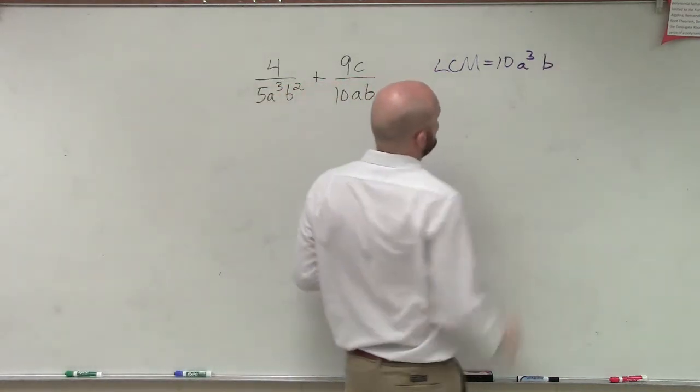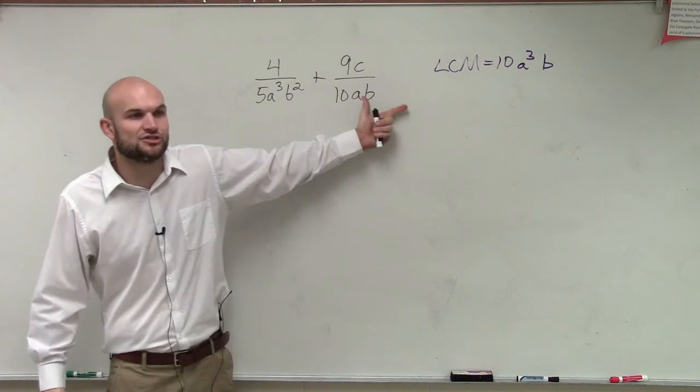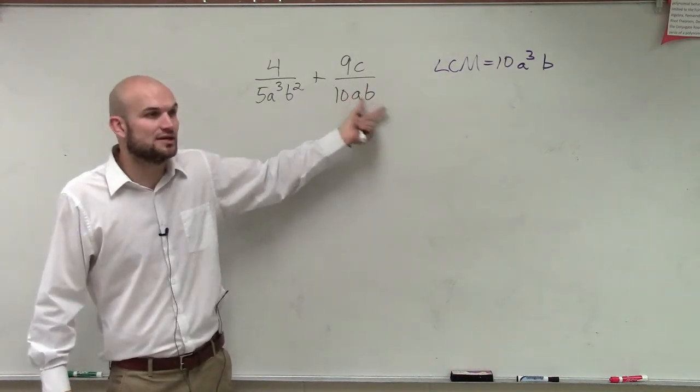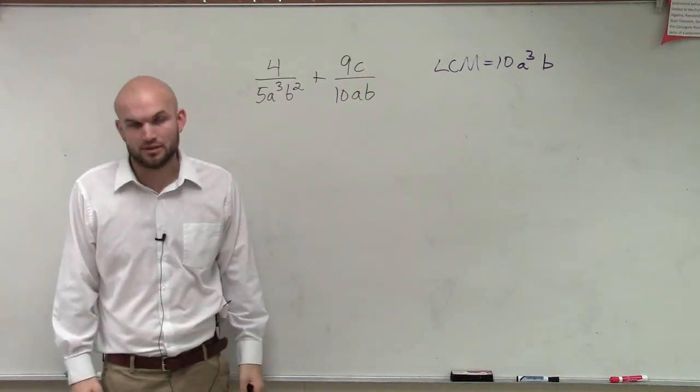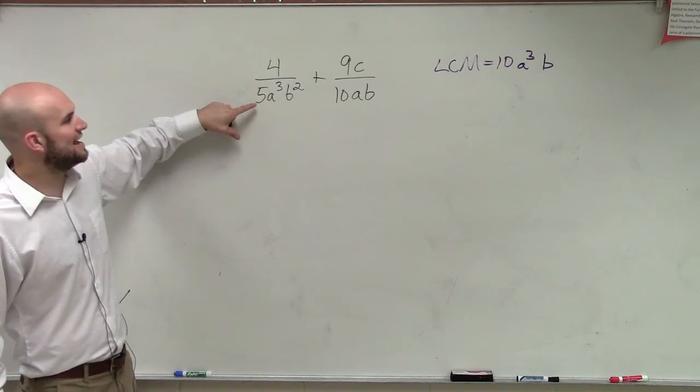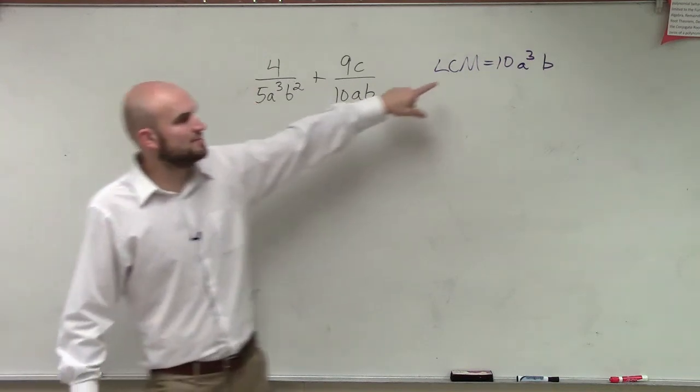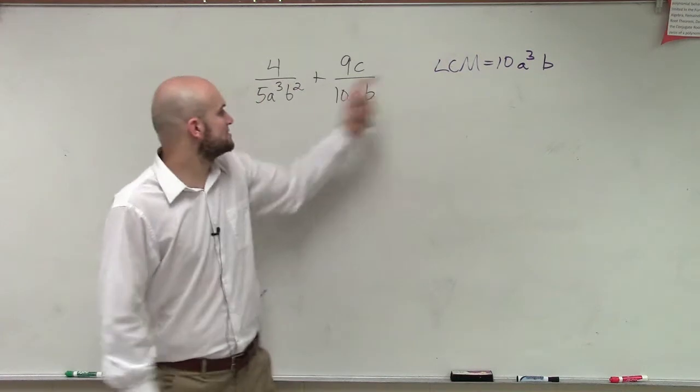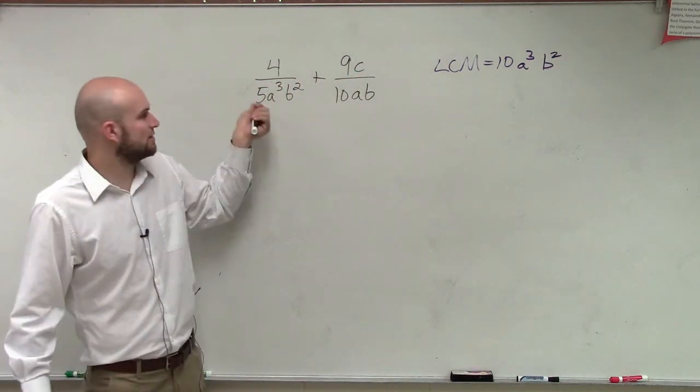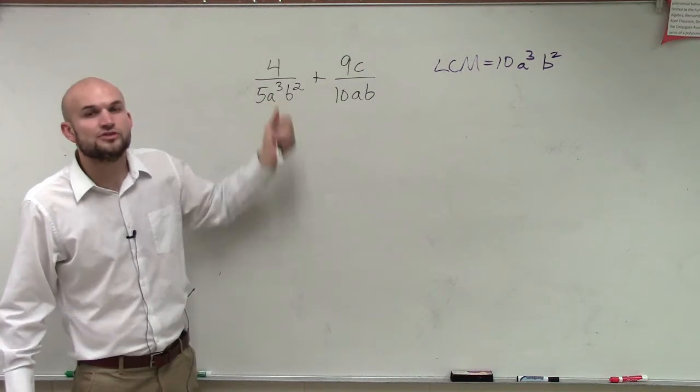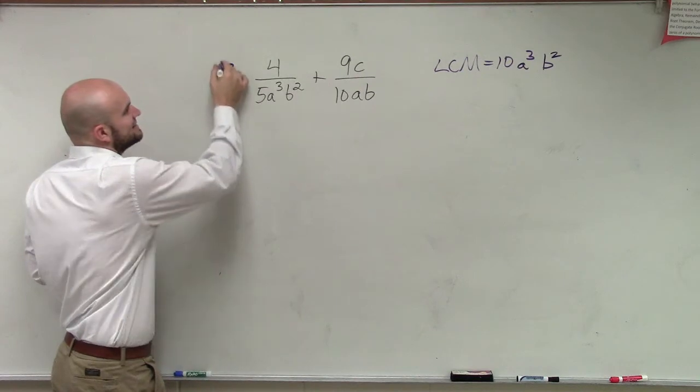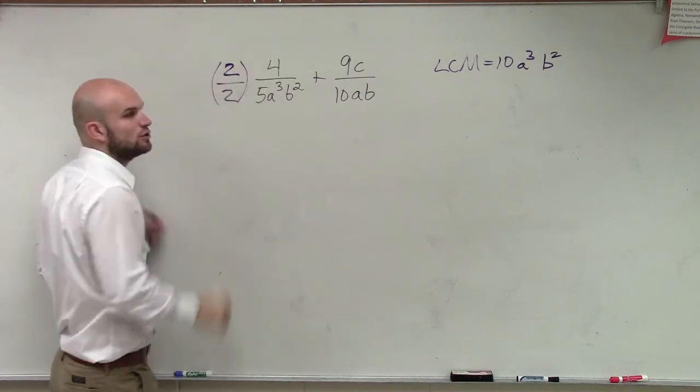So, that is my LCM. So, what that means is I need to make sure that I need to get both of my denominators to be equal to my LCM. So, let's look on the left side. What do I need to multiply 5A cubed B squared by to make sure it's 10A cubed B squared? Or, I'm sorry, B squared. Well, I already have A cubed and B squared, so what do I need to multiply the 5 by? 2. 2. But remember, when you're multiplying, you have to multiply in the numerator and in the denominator to keep equivalent fractions.